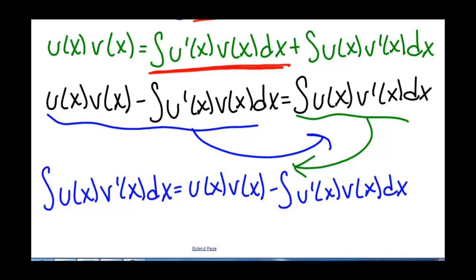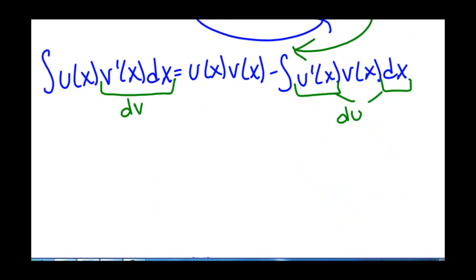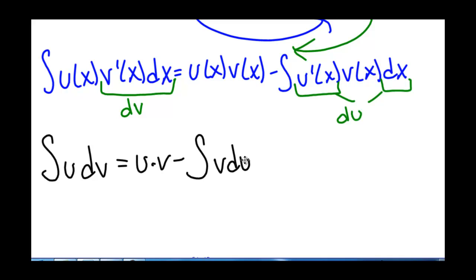Now we can note that v'(x) dx is equal to dv, and u'(x) dx is equal to du. By suppressing our independent variable x, we can rewrite this as the integral of u dv equals u times v minus the integral of v du. This is our integration by parts formula — we use it to express our original integral in terms of u times v minus a new integral v du.